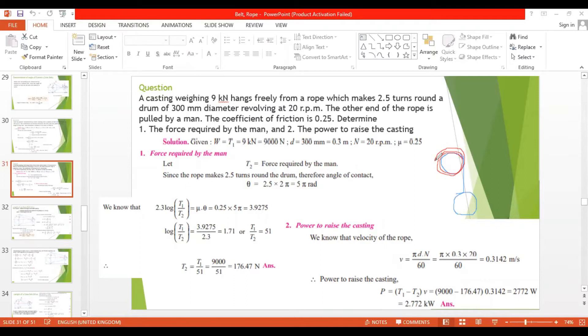The other end of the rope is pulled by a man. There's a man pulling the other end, this is the weight. The diameter of this is 300 millimeter and it is rotating at 20 rpm. The coefficient of friction is 0.25, so mu is 0.25.